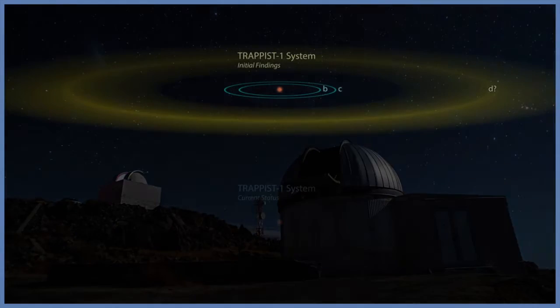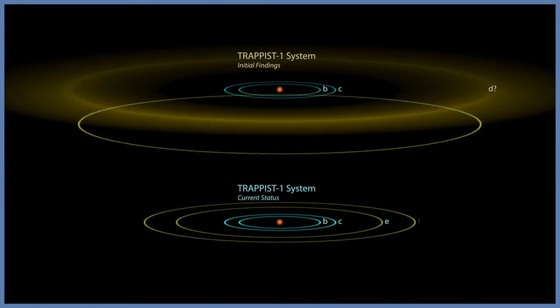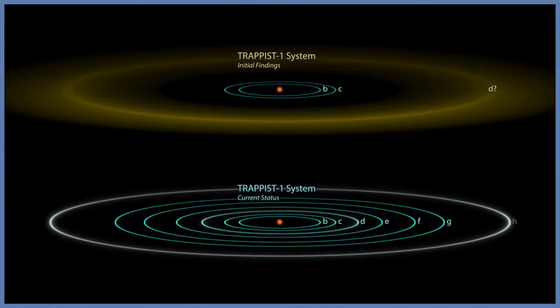In May 2016, researchers at this telescope discovered three exoplanets in this system. Later on, other telescopes, like the Spitzer Space Telescope, confirmed the existence of two of these planets and discovered five more planets in their results. This increased the system to seven planets.